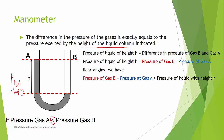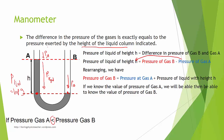By rearranging, the pressure of gas B equals the pressure of gas A plus the pressure of the liquid column of height H. This means the pressure at that level is comprised of two parts: the pressure of gas A pressing down on the liquid, and the pressure of the liquid column itself. So if we know the pressure of gas A and the height difference, we can find the pressure of gas B.